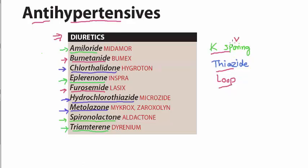In the potassium sparing diuretics we have amiloride, then we have eplerenone, then we have spironolactone, and finally triamterene.